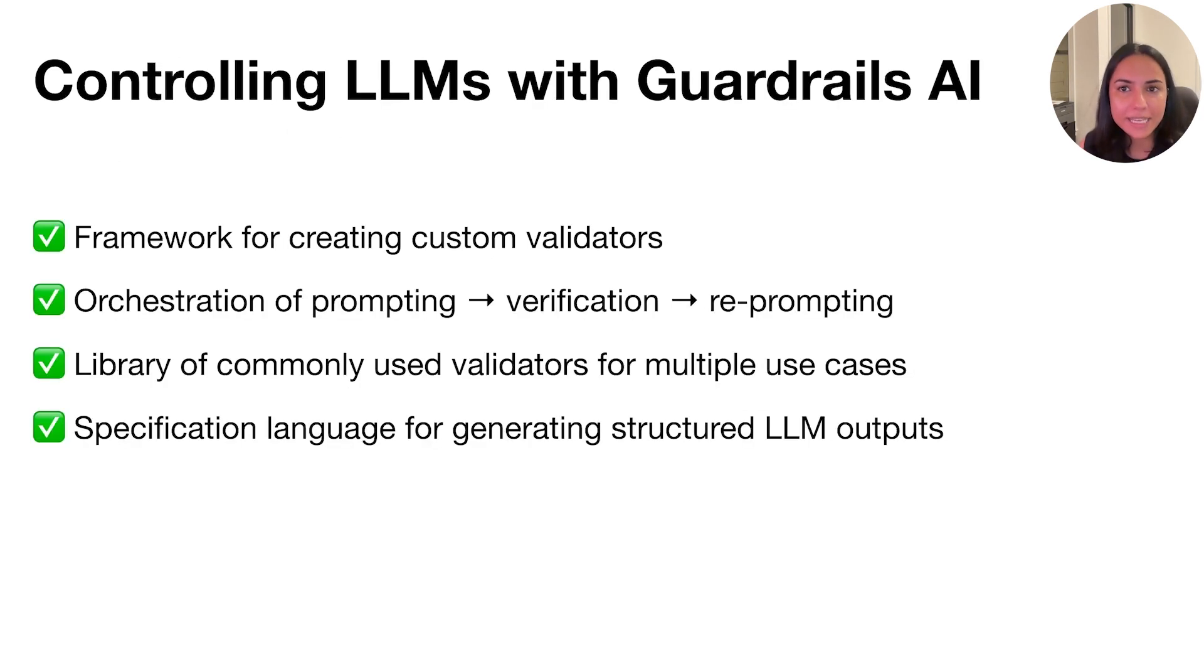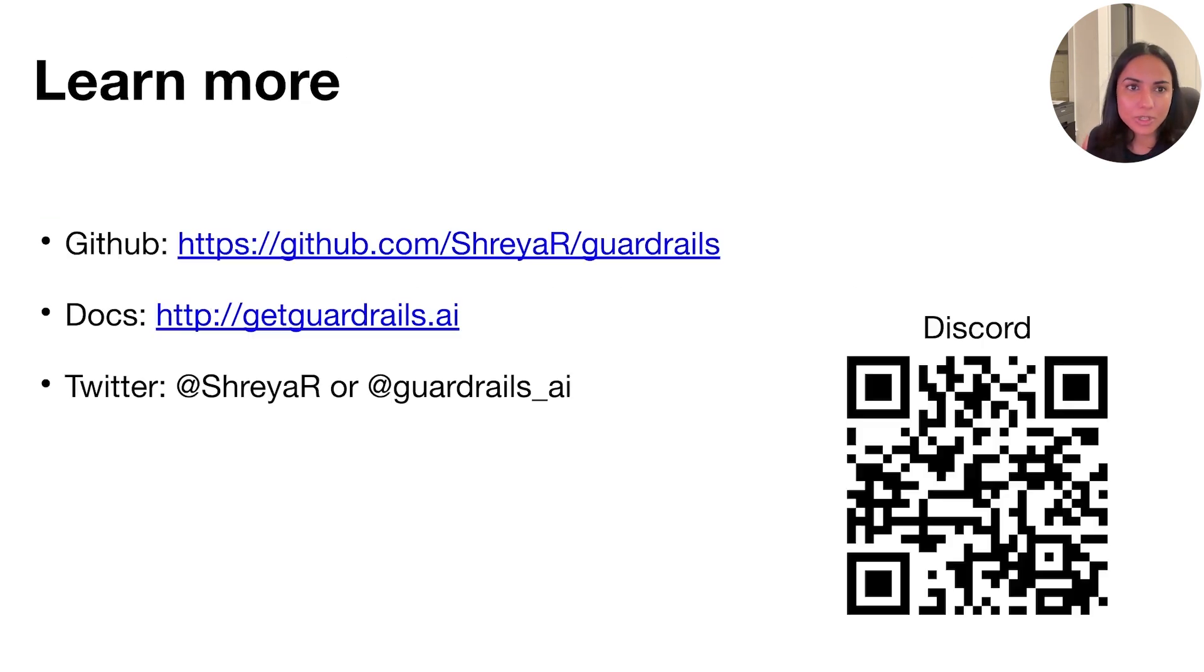In summary, guardrails.ai is a framework for creating custom validators. It's a library of many commonly used validators across multiple use cases. It's an orchestration system for prompting, verification, and regenerating prompts, in addition to having a specification language for generating structured LLM outputs.